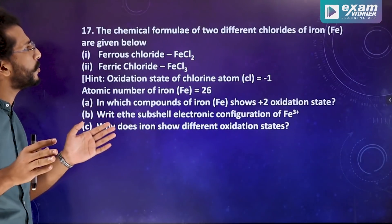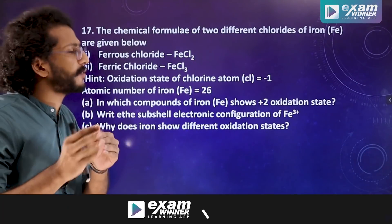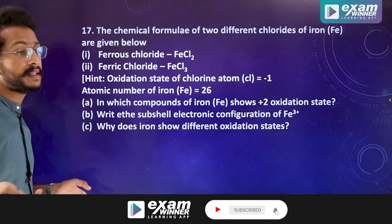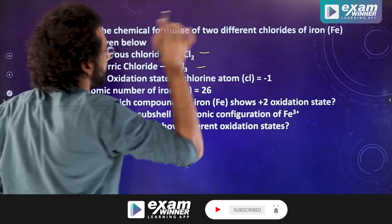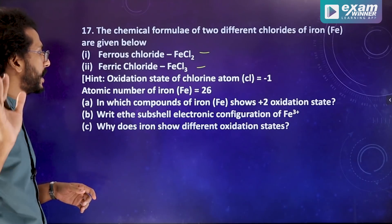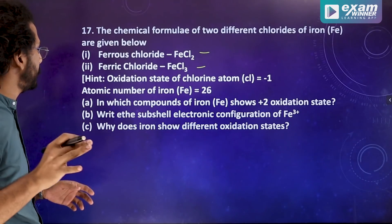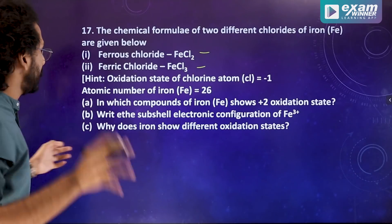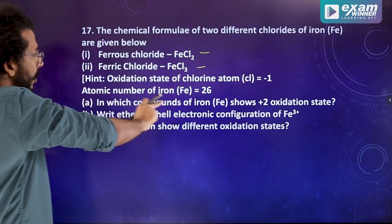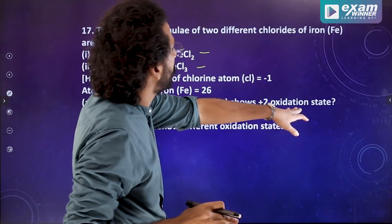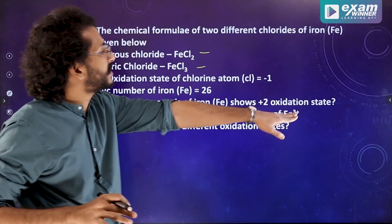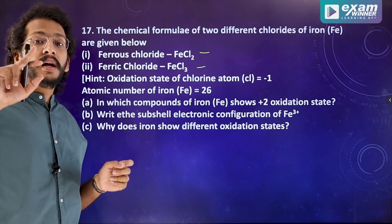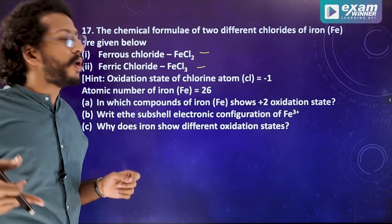Question number seven: the chemical formulas of two different chlorides of iron are given — FeCl2 and FeCl3. The atomic number of iron is 26. Which compound of iron shows the plus two oxidation state? FeCl2 shows plus two oxidation state.